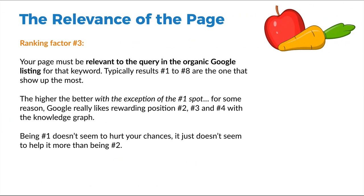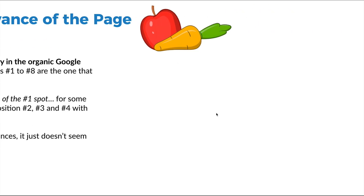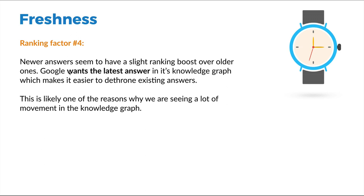Regarding relevance of the page, your page has to be relevant to the query. Typically, results ranking number one to eight are the best candidates for a search snippet. If you're on page two, three, or four, you typically won't get the search snippet — you really need to be on the first page. Interestingly, it actually seems to work better to be in position two, three, or four than number one for some reason. And for freshness: Google wants the latest answer. If your search snippet is not doing well, just update your page and update the answer — that's automatically going to give you a boost.